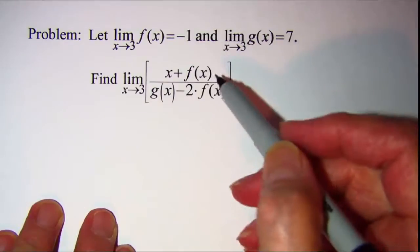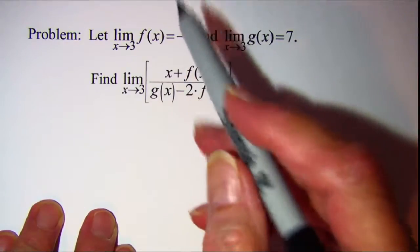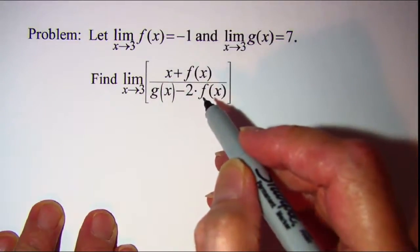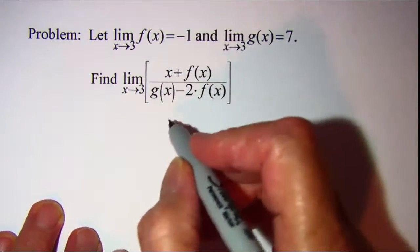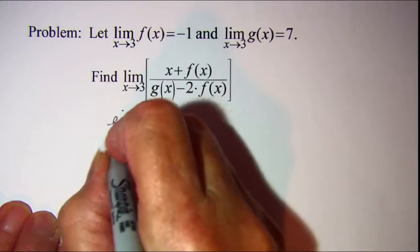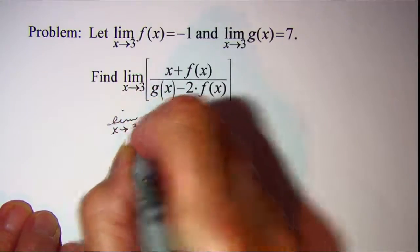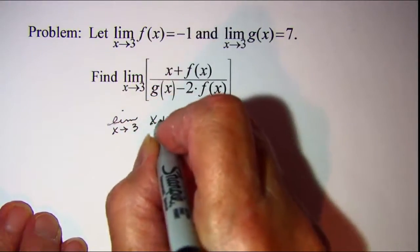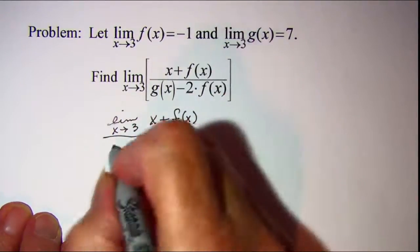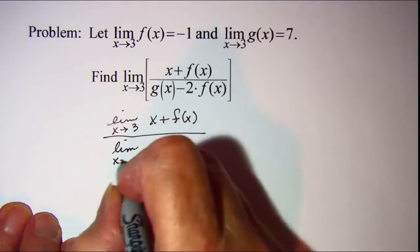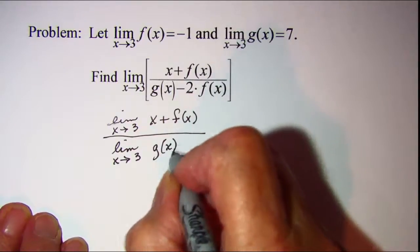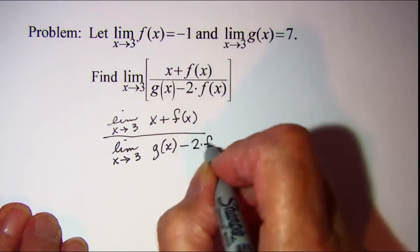We know from the third limit theorem that the limit of a quotient is the quotient of the limits. So we can rewrite this as the limit as x approaches 3 of x plus f of x, over the limit as x approaches 3 of g of x minus 2 times f of x.